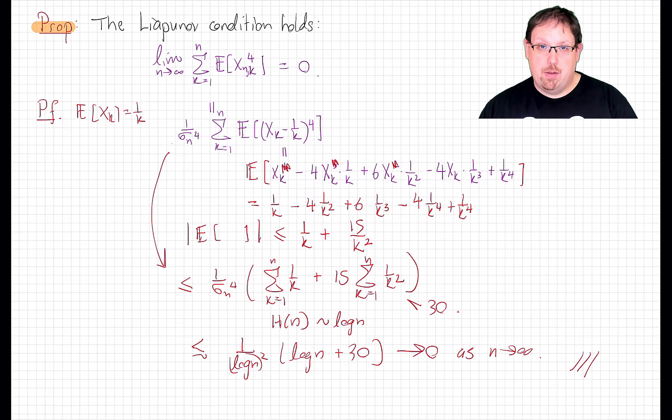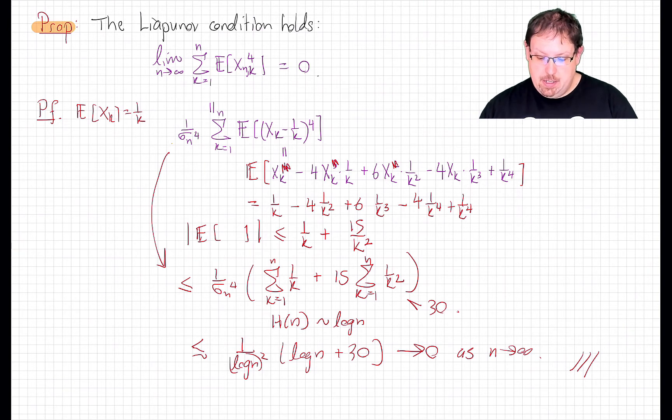And since the Lyapunov condition implies the Lindberg condition, we have the Lindberg central limit theorem holding in this case. So for these renormalizations of those original Bernoulli random variables, the sum of the nth row converges weakly to a standard normal distribution.